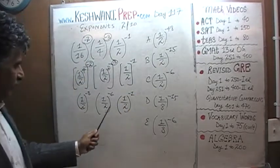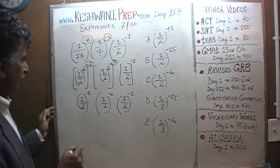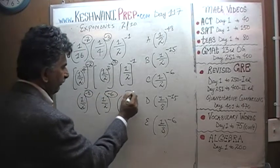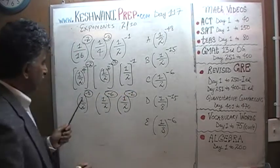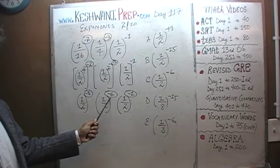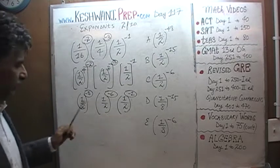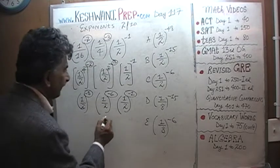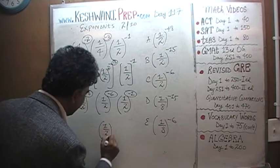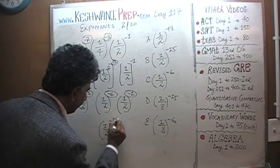Now we have the same base: 1 half, 1 half, 1 half. We simply have to add up the powers. Negative 8, negative 6, and negative 1. Negative 8 plus negative 6 is going to be negative 14. Negative 14 and negative 1 is negative 15. That's it, we are done. It's 1 half raised to negative 15.